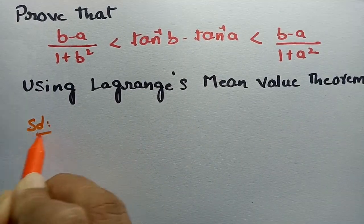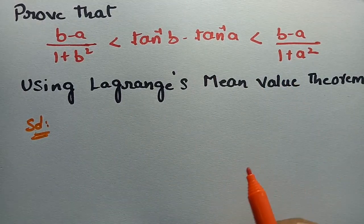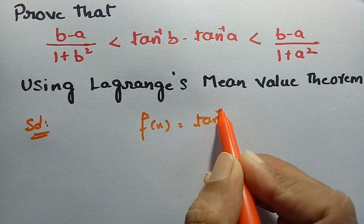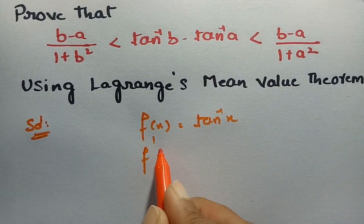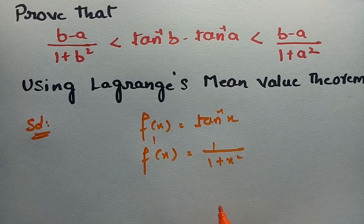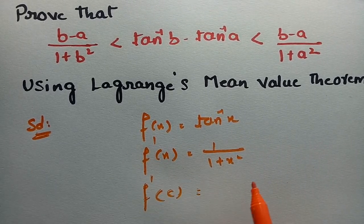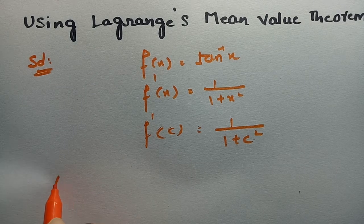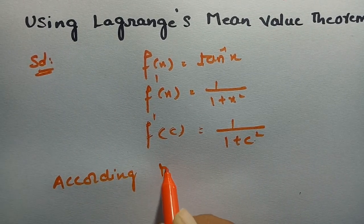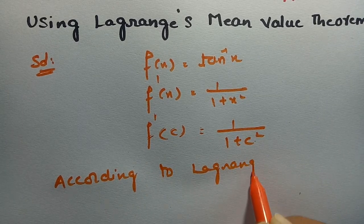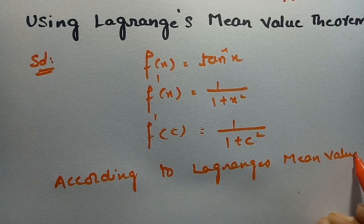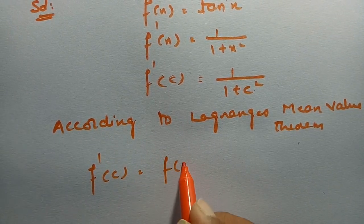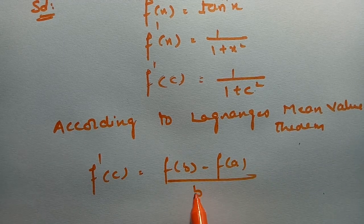Using Lagrange's mean value theorem, we have to prove this inequality. For that, let us assume that f(x) = tan⁻¹(x). So f'(x) = 1/(1+x²), and f'(c) = 1/(1+c²). According to Lagrange's mean value theorem, we have f'(c) = [f(b) - f(a)] / (b - a).